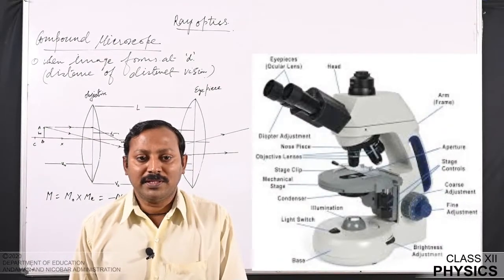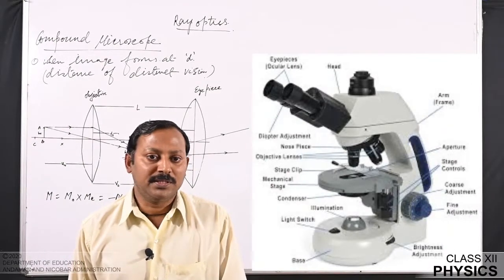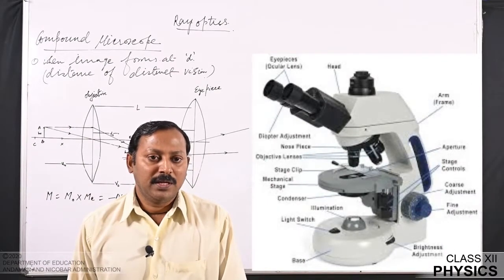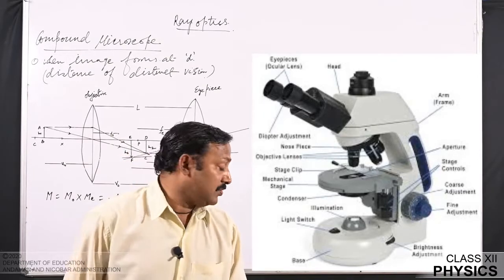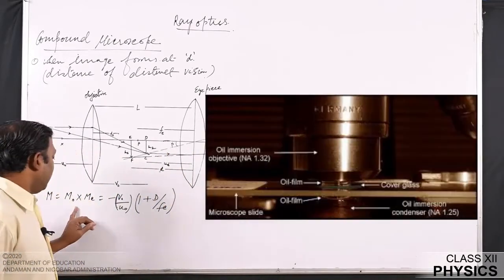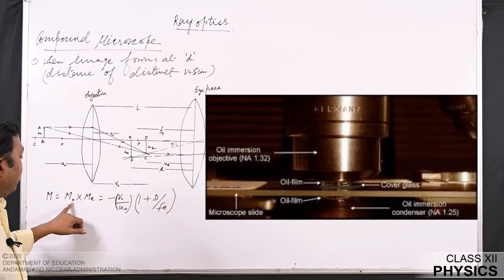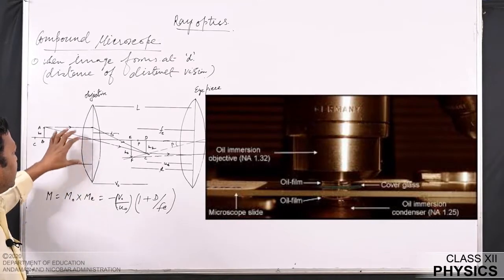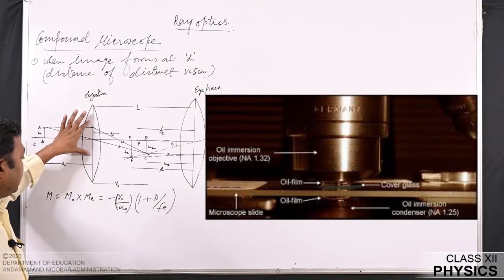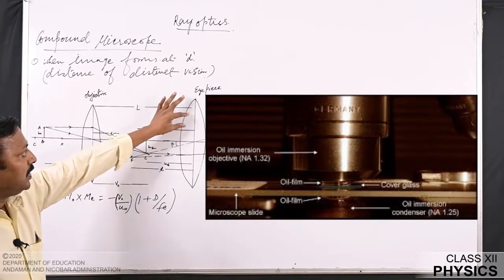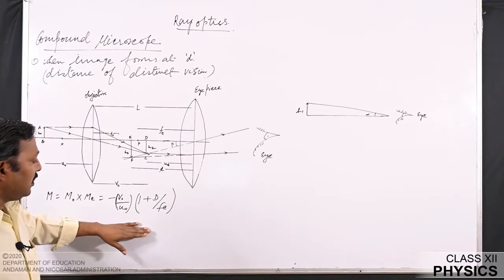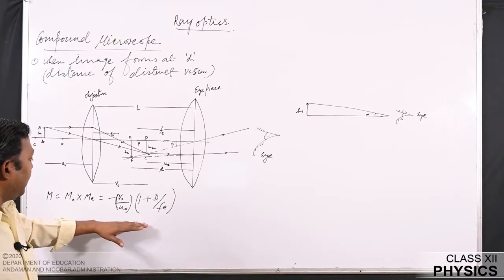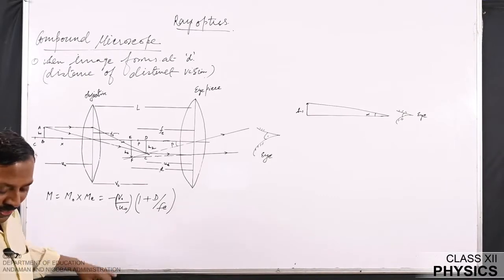Hello students, we are dealing with the chapter ray optics. Under this chapter I taught you regarding compound microscope in my previous classes, and we derived the relation M = m₀ × mₑ, where m₀ is the magnification produced by the objective lens and mₑ is the magnification produced by the eyepiece. This is what we derived in our last classes. Now we will try to elaborate this derivation further.